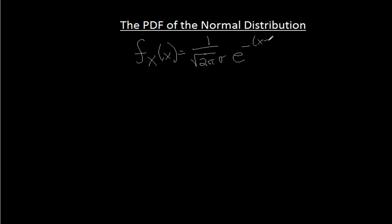Times e to the negative x minus mu squared divided by two sigma squared, is that really a PDF? Well, it turns out that it is,